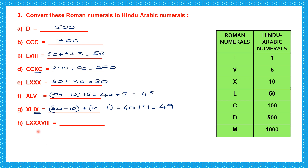Next: L is 50, plus XXX is 30, plus VIII is 8 — so 50 plus 30 plus 8 equals 88.